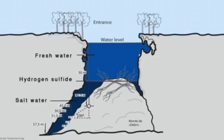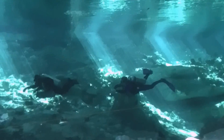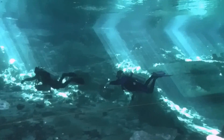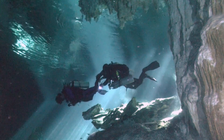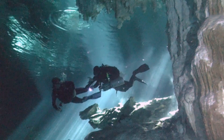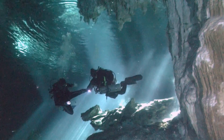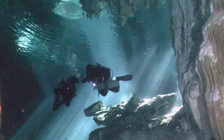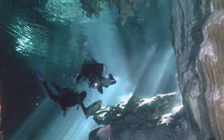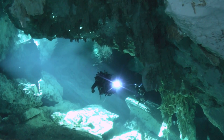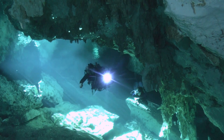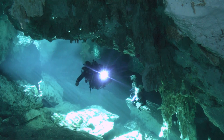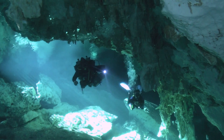Cenotes' water is often very clear, derived from rainwater filtering slowly through the ground and therefore contains very little suspended particulate matter. They're usually filled with turquoise and green crystalline water. The groundwater flow rate within a cenote may be very slow. In many cases, cenotes are areas where sections of cave roof have collapsed, revealing an underlying cave system.